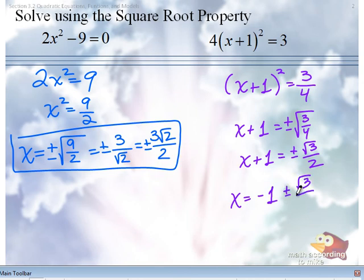Okay. So x is negative 1 plus or minus the square root of 3 all over, well, not all over, over 2.